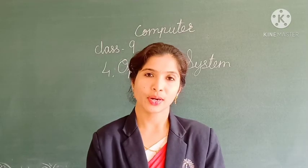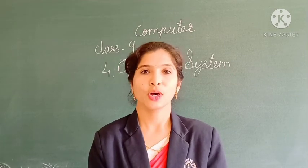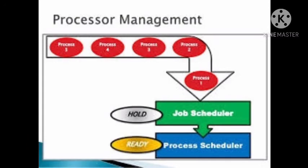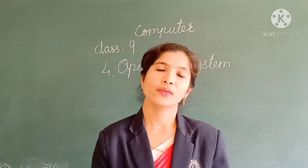Now we are going to see operating system as processor manager. Job scheduling determines the time of processing of various jobs. An operating system uses special languages such as job control language. Program initiation determines the time and method to initiate processing of the next job step. Process scheduling organizes the execution of all processes of each job step.